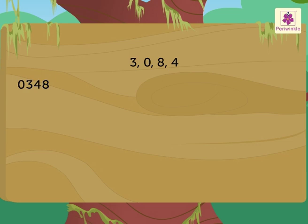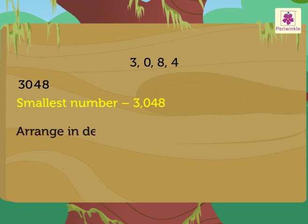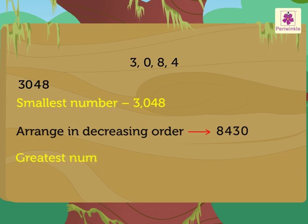We interchange 0 and 3 to get the smallest number, that is, 3, 0, 4, 8. So, the smallest number is 3,048. Now, to form the greatest number, we arrange it as 8, 4, 3, 0. Thus, we get the greatest number as 8,430.